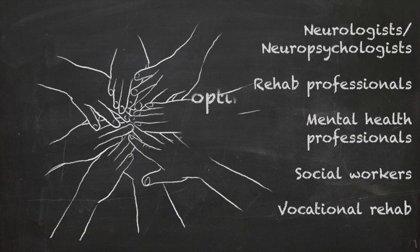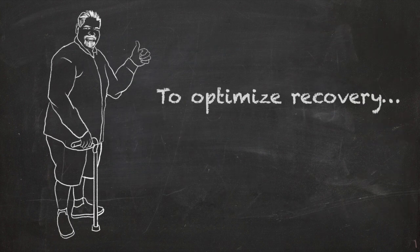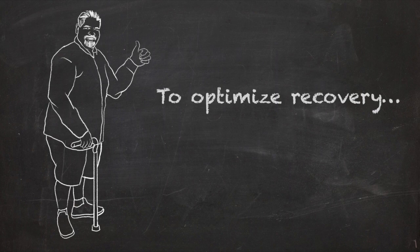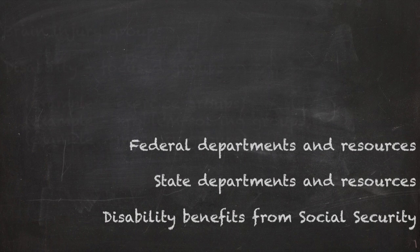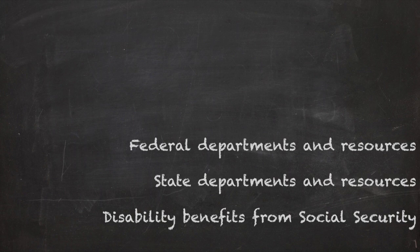To optimize recovery, it is also important to use available community resources, for example, brain injury groups and groups that focus on a particular disability, and tapping into federal and state human services departments and resources, including disability benefits from social security.